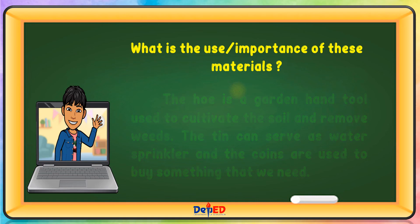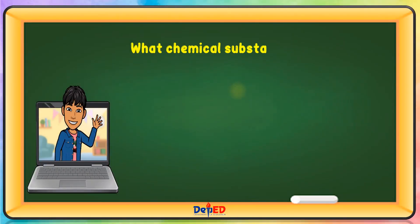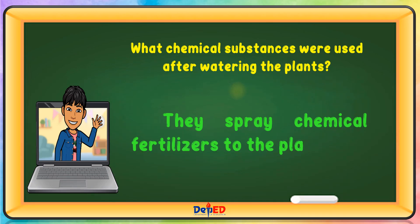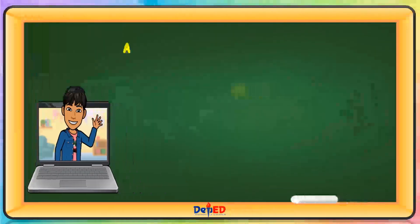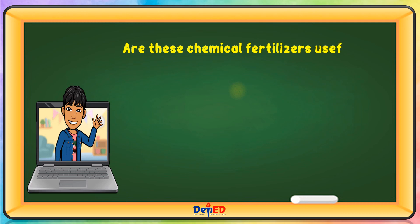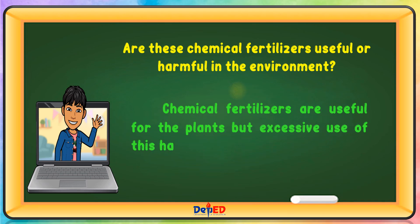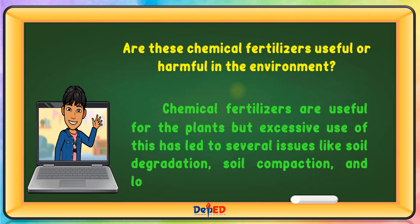What chemical substances were used after watering the plants? They sprayed chemical fertilizers on the plants. Are these chemical fertilizers useful or harmful in the environment? Chemical fertilizers are useful for the plants, but excessive use has led to several issues like soil degradation, soil compaction, and loss of soil carbon.